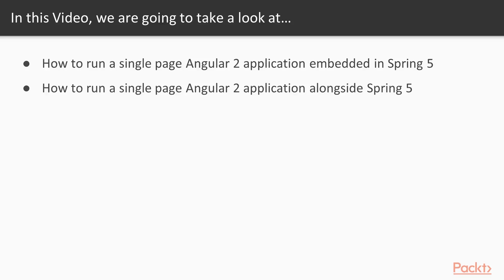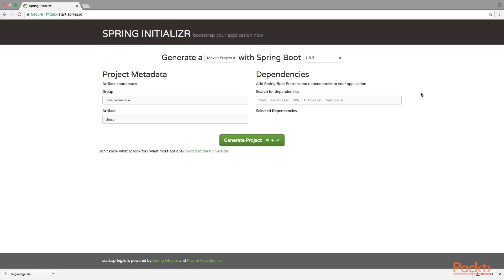In this video we are going to take a look at how to run a single page Angular 2 application embedded in Spring 5, and how to run a single page Angular 2 application alongside Spring 5. The first application is going to be an embedded Angular 2 application in Spring 5. To create our application we will start again from the Spring Initializer tool.